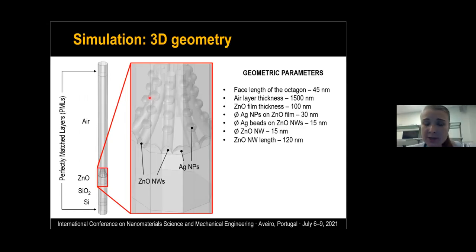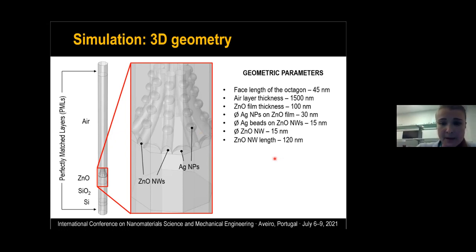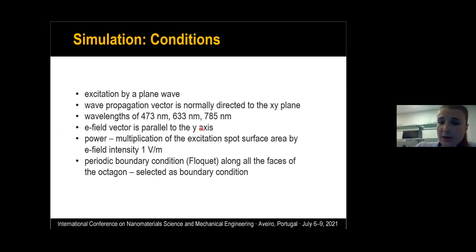This sample presents a kind of quasi-ordered array of connected zinc oxide nanowires coated with silver beads, and also samples free of silver beads for comparison. We simulated 3D geometry in COMSOL 5.3. The geometric parameters are presented here: the base of each group of zinc oxide nanowires is an octagon with a facet length of 45 nanometers. We used a plane wave; the wave propagation was normally directed to the xy-plane. We used three wavelengths: blue, red, and near-infrared. The vector of the electric field was parallel to the y-axis.